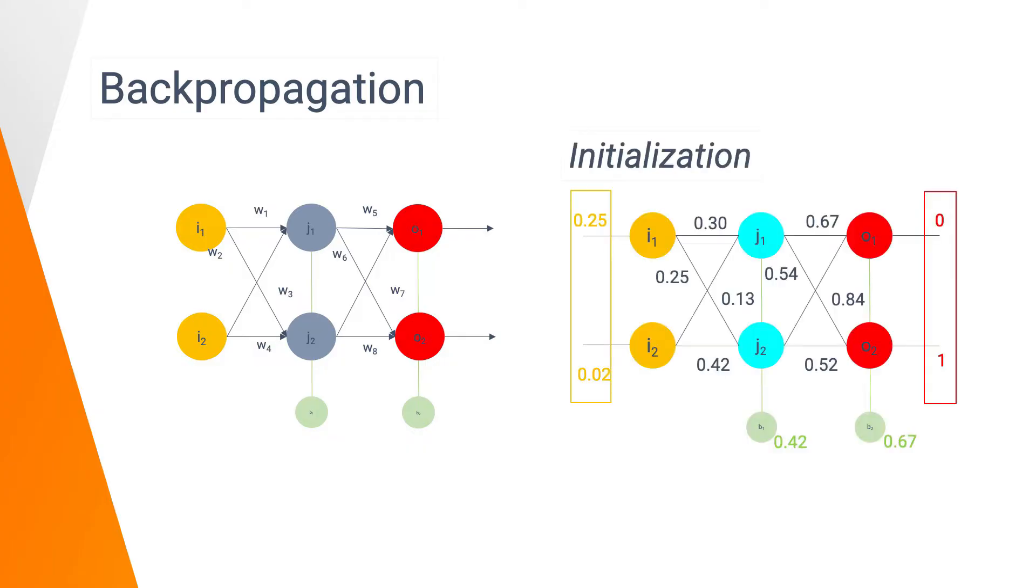We will feed our neural network with two numbers here in yellow, and we are looking to predict 0 and 1 here in red. First of all, we initialize the weights of our neural networks randomly. We also set a bias in each layer, here in green.